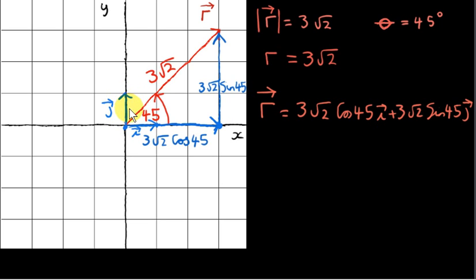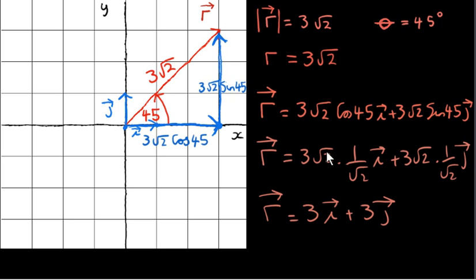Similarly, unit vector j is a vector of length 1 pointing in the positive y direction. So this vector, which is the side opposite 45 degrees in the right-angled triangle, is 3 root 2 sin 45 multiplied by j — j scaled up by the factor 3 root 2 sin 45. By the triangle law, we add this vector onto this vector to get vector r. The cos of 45 is 1 over root 2, so we get 3i. Similarly, sin of 45 is also 1 over root 2. So vector r is 3i plus 3j.